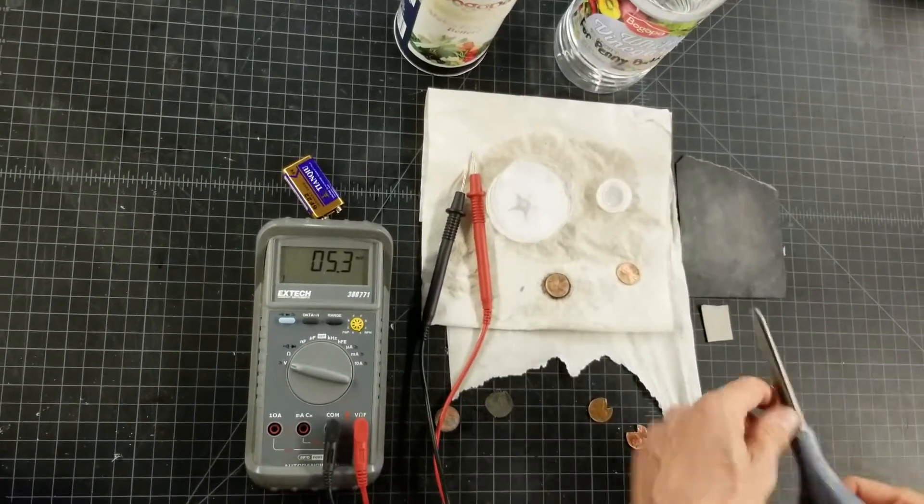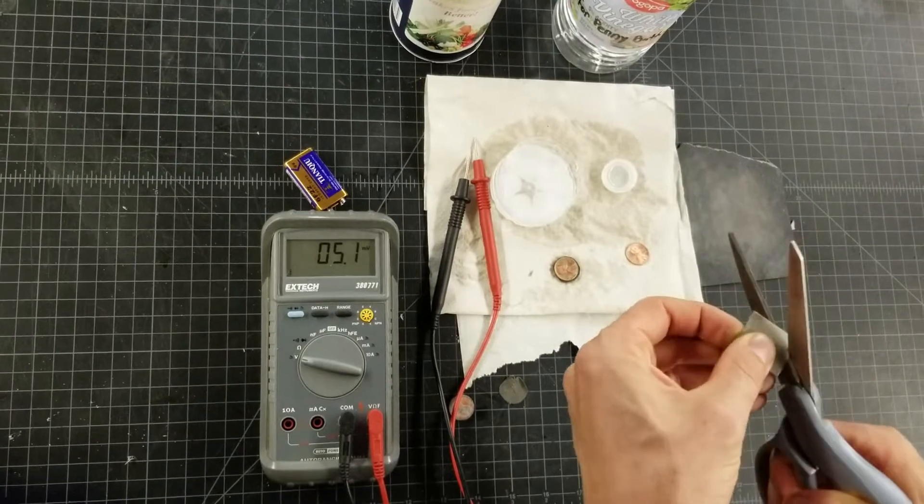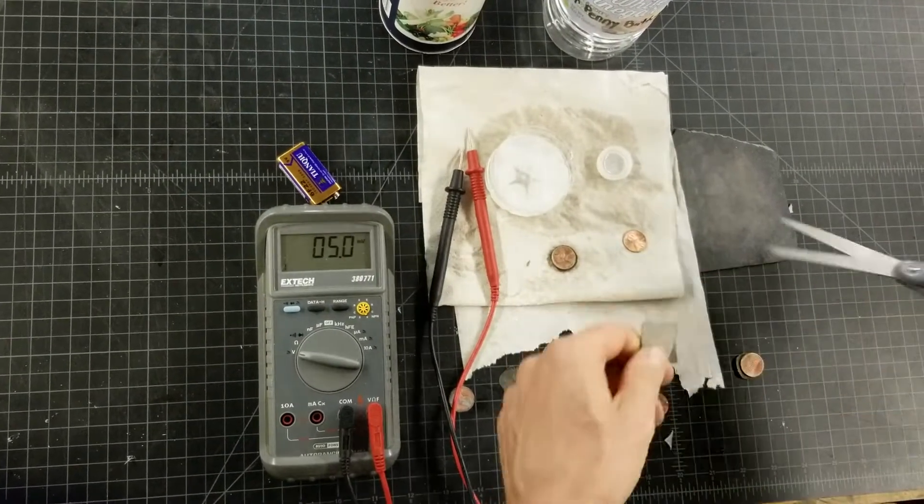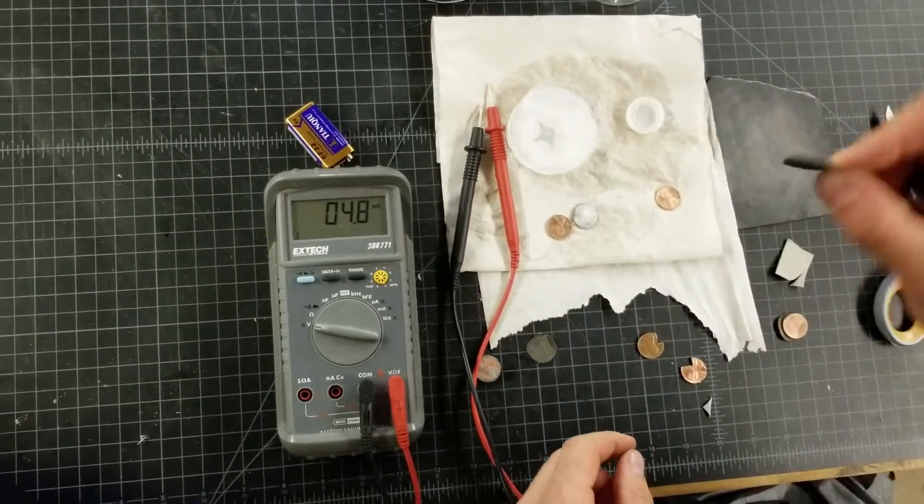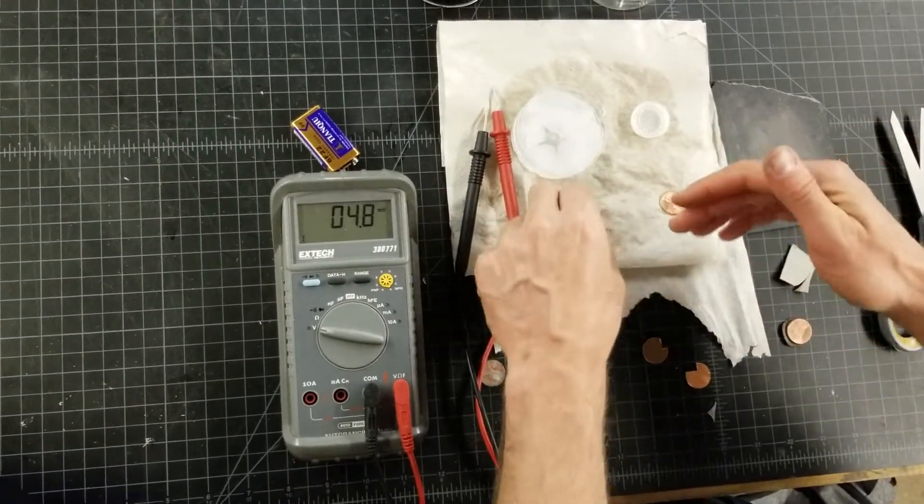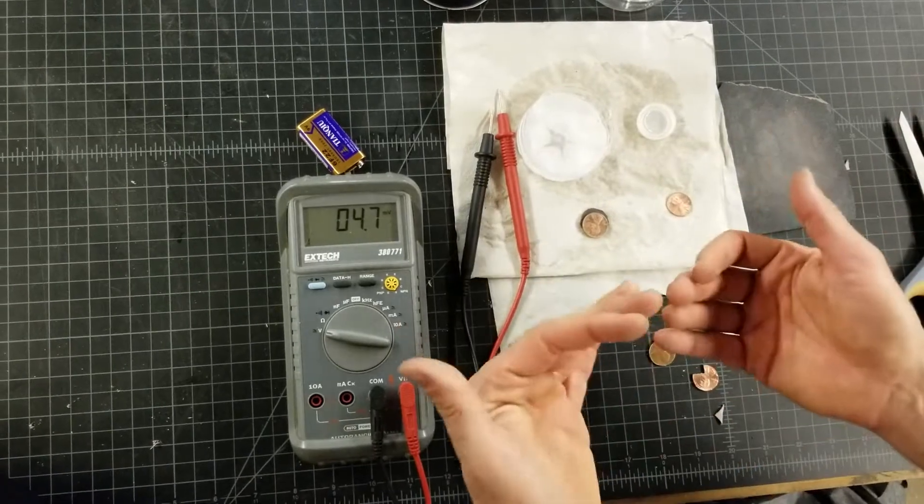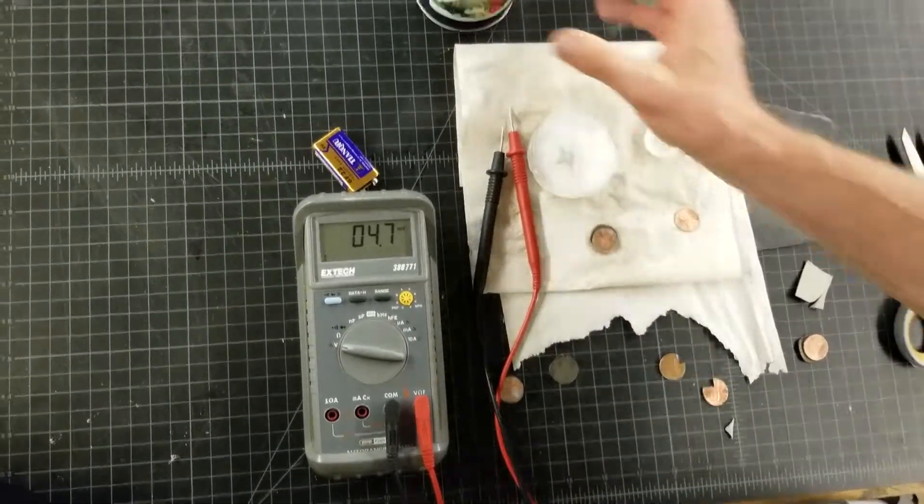Then you take your scissor and you go ahead and cut like a circle all the way around. And then you'll end up with this right here. Put them together and you'll get it. And then you can stack these up. Now, I'm using vinegar, but you could use salt.